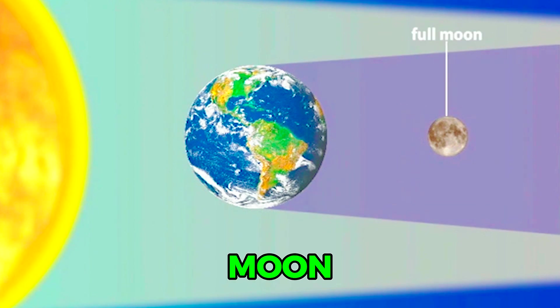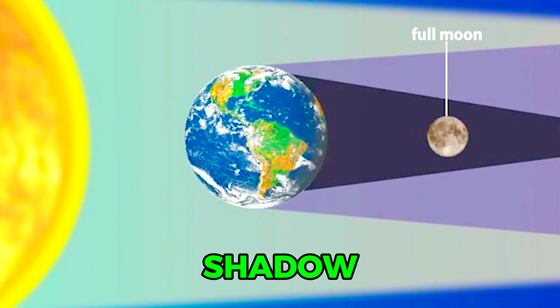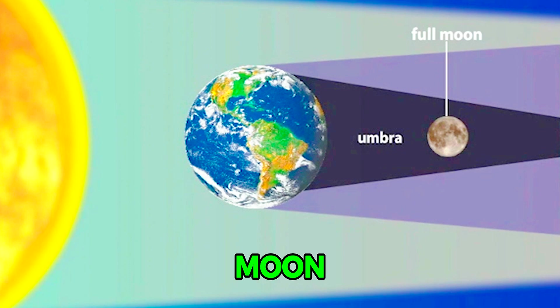The entire Moon falls within the Earth's dark shadow, or umbra. The completely darkened Moon can be seen at all locations on Earth where the Moon is visible.